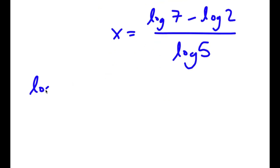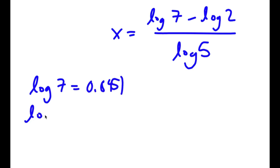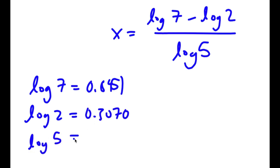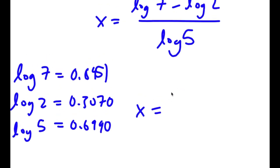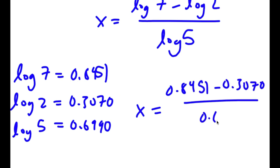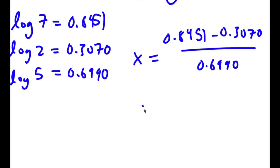Now log 7 equals 0.8451, log 2 equals 0.3010, and log 5 equals 0.6990. So x equals (0.8451 minus 0.3010) over 0.6990, which equals approximately 0.7784.